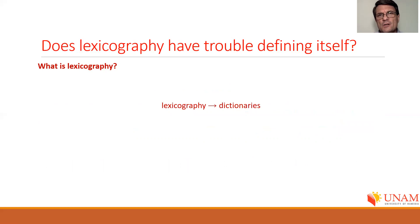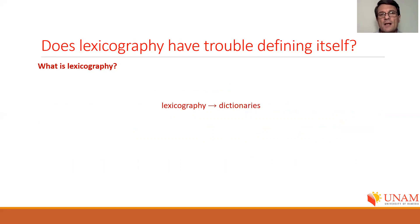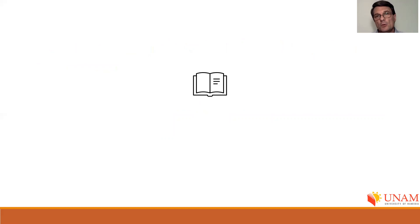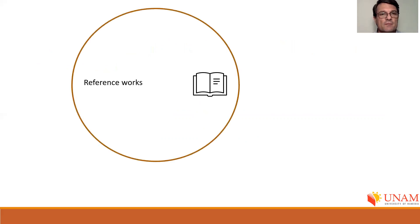So the original traditional implication relation — lexicography means dictionaries — which was still valid within the function theory in 2012, has changed. Now, if you have lexicography, you have reference works, meaning lexicography has everything to do with studying, planning, and making reference works, of which dictionaries are only one type. If we draw a circle to represent the set of reference works, dictionaries represent only a subset of the reference works that exist, and that is the domain of the function theory.